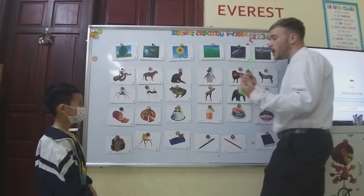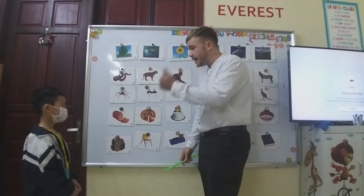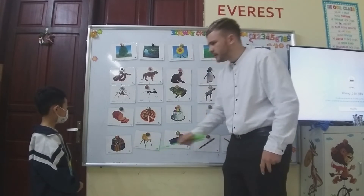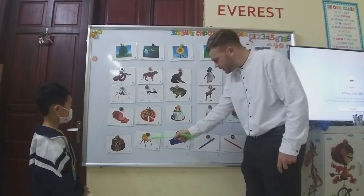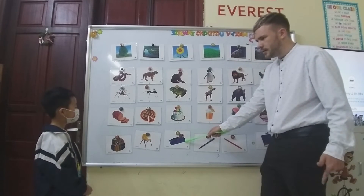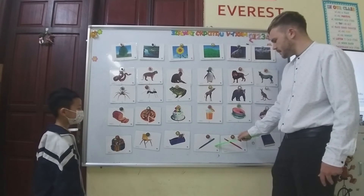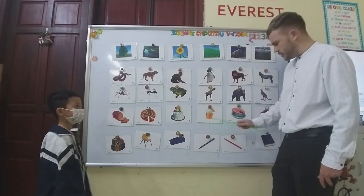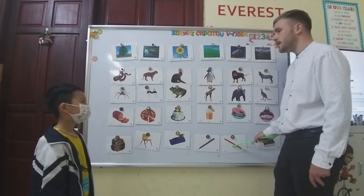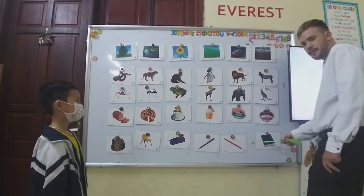What can you see? Or what is this? It's a... What is this? It's a pen. What is this? It's a pen. What is this? It's a pen. What is this? It's a book. It's a book.